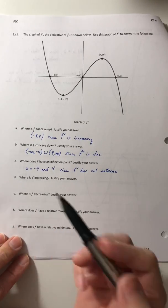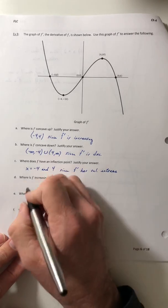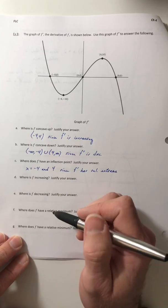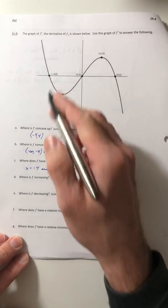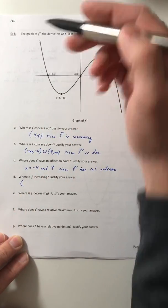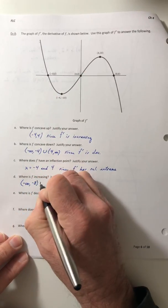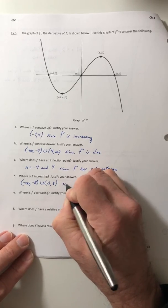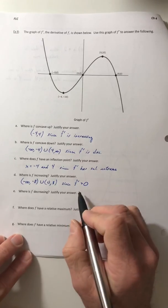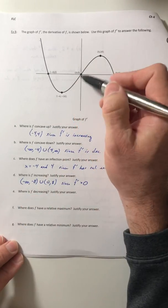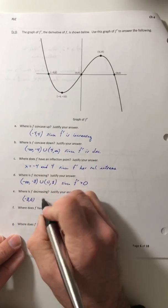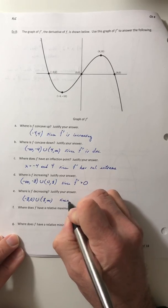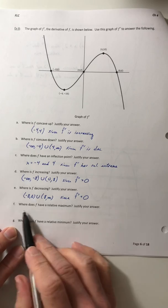The rest of the questions deal with what we covered in section 4.3. Where is F increasing? F is increasing whenever the derivative is positive — so where is the derivative above the x-axis? That would be from negative infinity to negative 8, and then from 0 to 8. That's since the derivative is positive. Where is F decreasing? That's where the derivative is underneath the x-axis: negative 8 to 0 and 8 to infinity, since the derivative is negative.